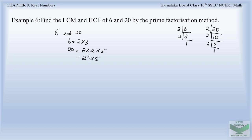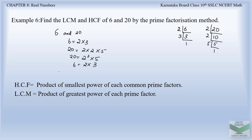We should always write factors in powers of primes and in ascending order. The prime factors of 6 are 2 and 3. Now we have to determine the LCM and HCF of 6 and 20. HCF is the product of the smallest power of each common prime factor. The common prime factor between 6 and 20 is 2. We take the lowest power of the common factor, which gives us HCF as 2.